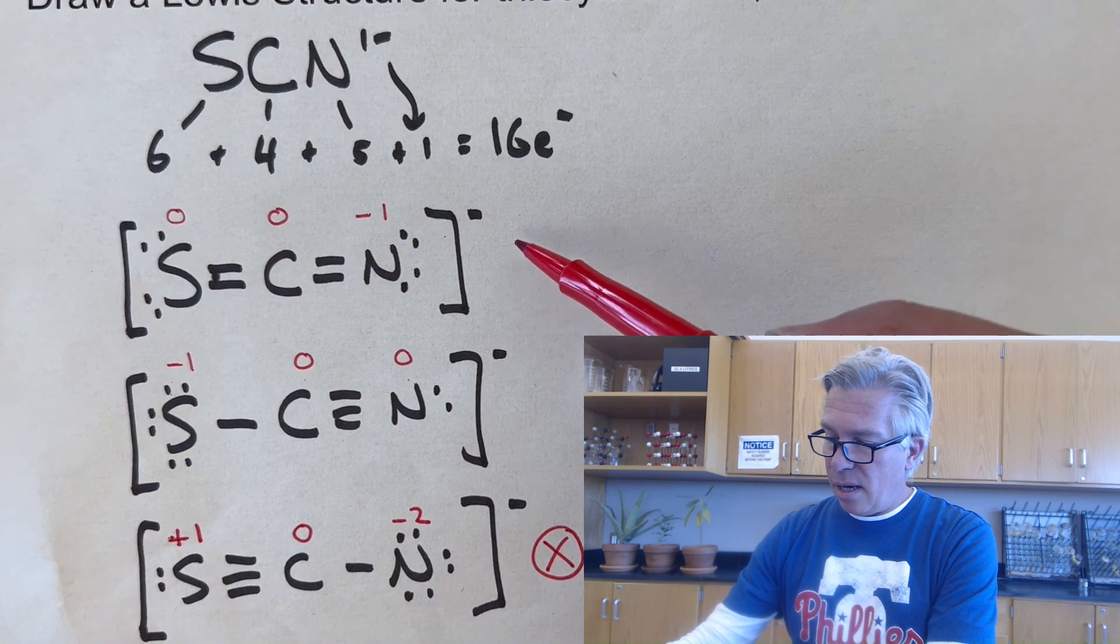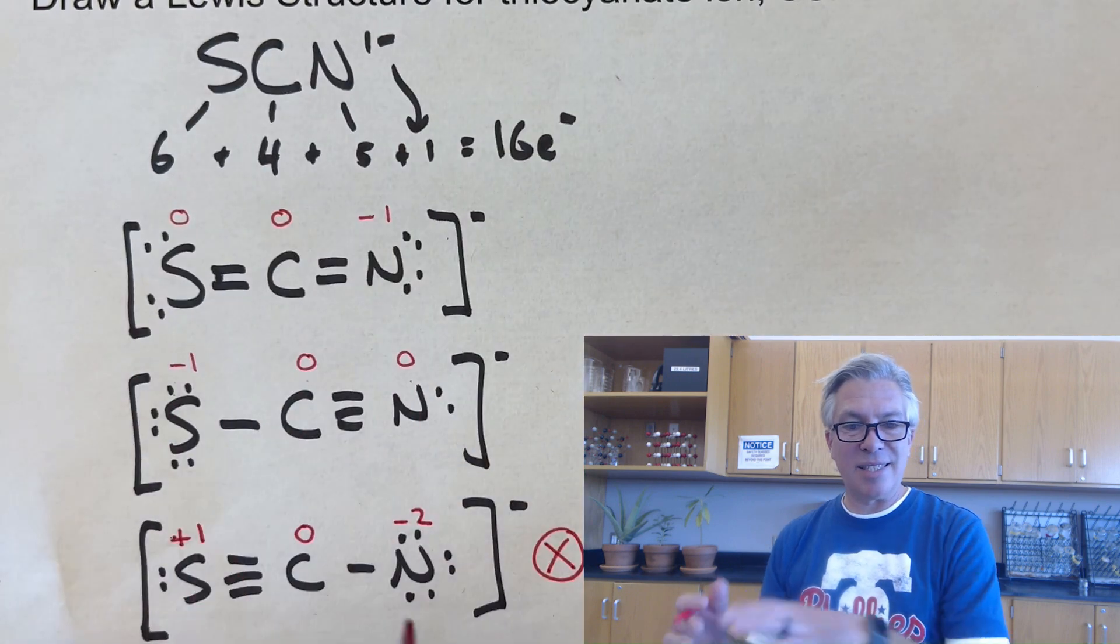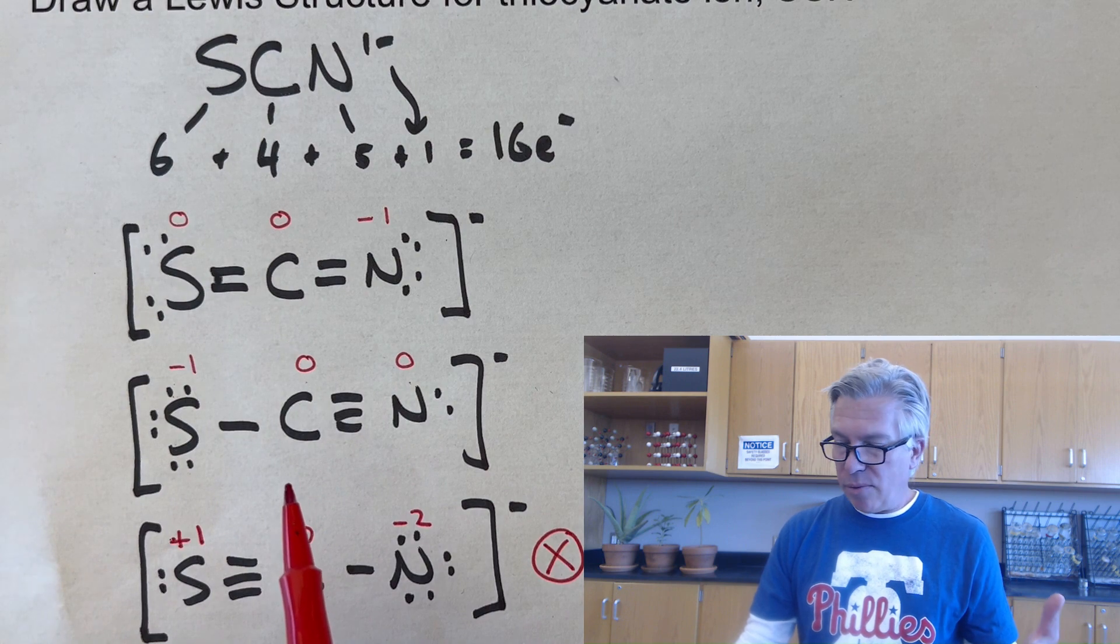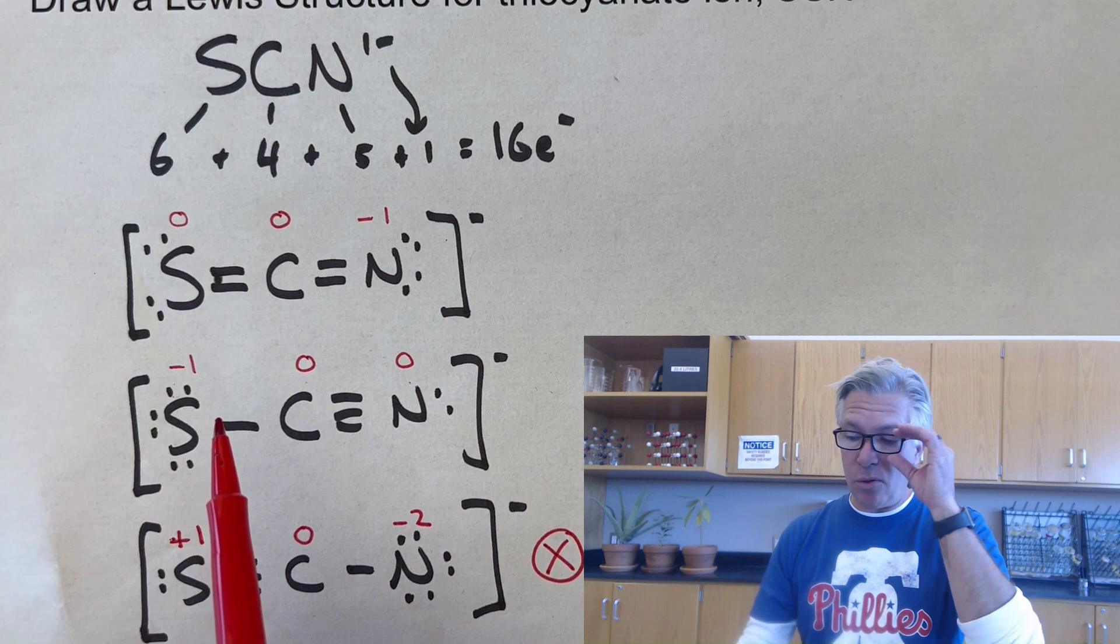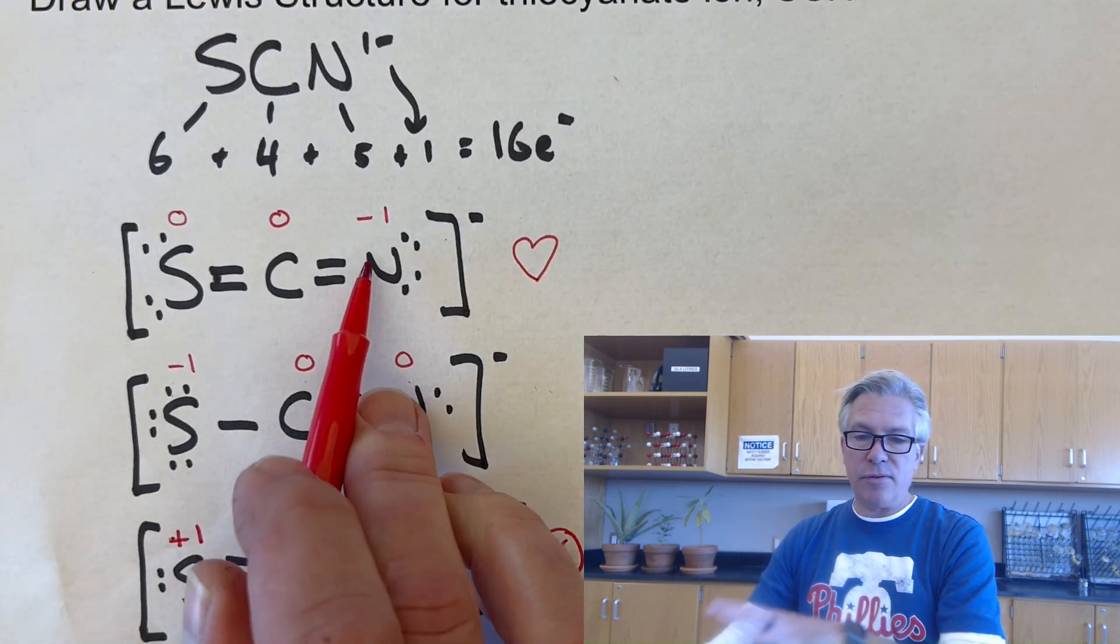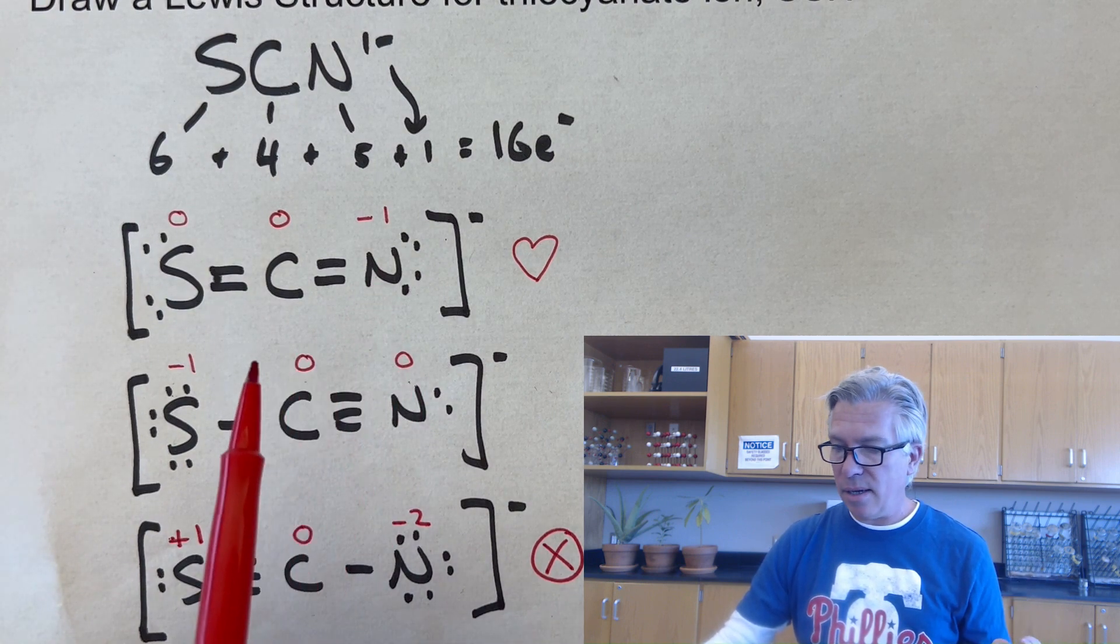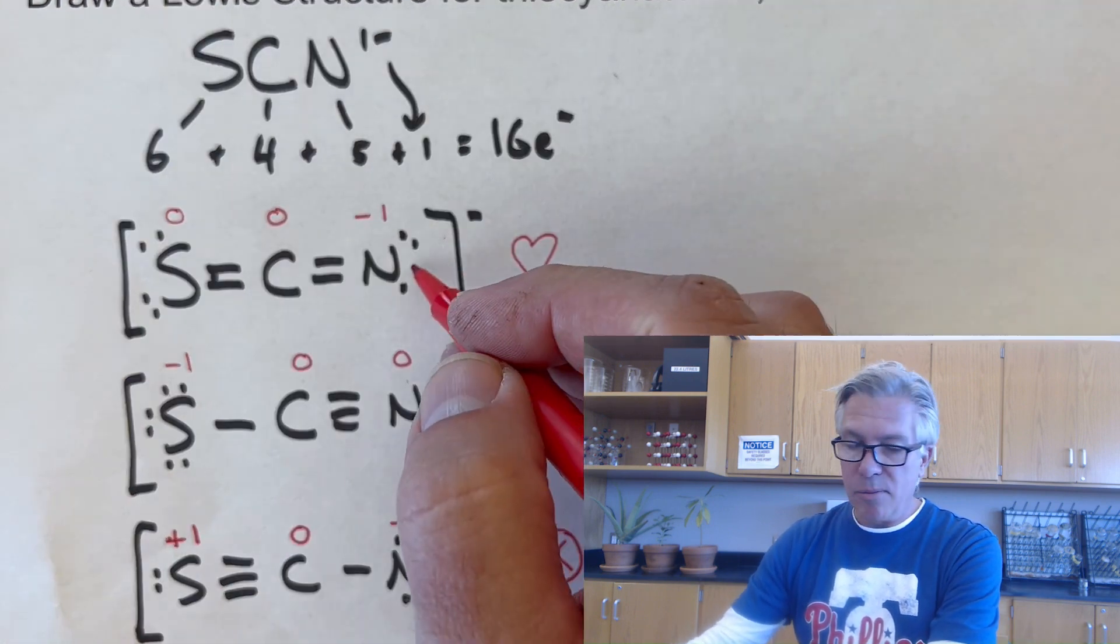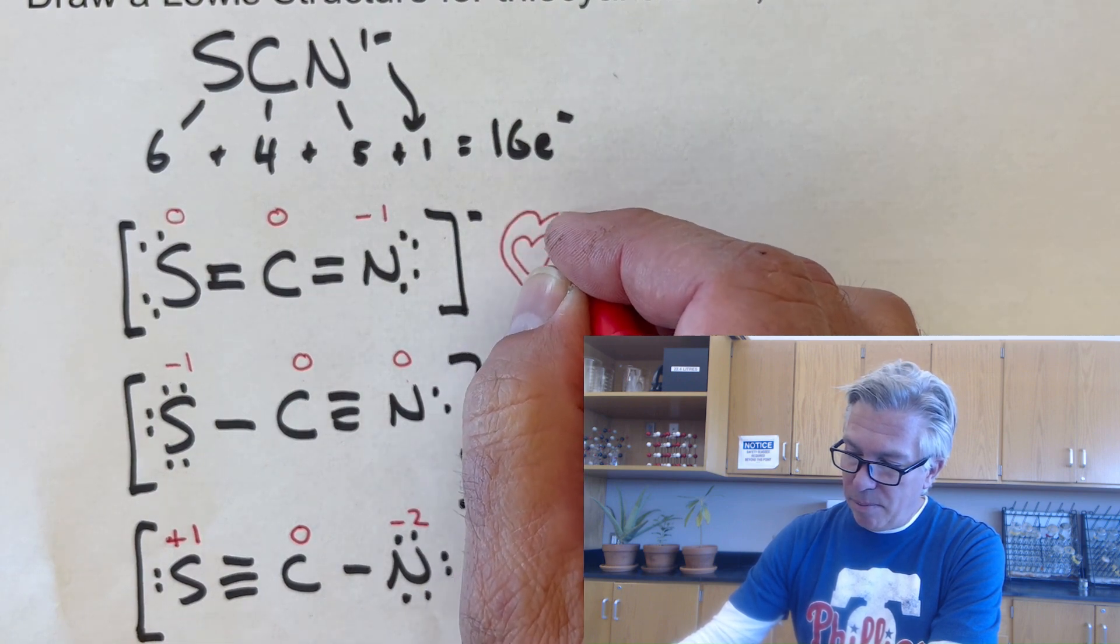Then the question becomes, and this is a little more advanced question, how do we decide which of these two is most likely? Are they equally likely to exist because they have the same set of formal charges? They probably exist at some point or another. But I think that the better resonance structure to choose as the most favorable one is this one because the negative charge, if you're ever trying to decide this, pick whichever one has the negative charge on the most electronegative atom in the molecule. And in this case, nitrogen is more electronegative than sulfur, and so it's probably more likely to be on that one. This one is probably okay too, but I think if I was picking, I would probably pick that one.